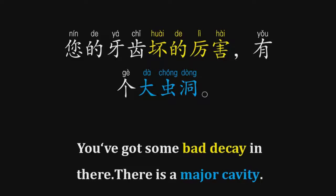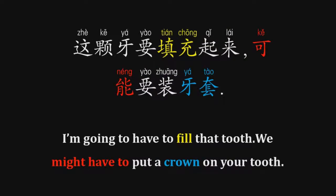There is a major cavity. 您的牙齿坏得厉害。有个大虫洞。 I'm going to have to fill that tooth. We might have to put a crown on your tooth. 这颗牙要填充起来，可能要装牙套。